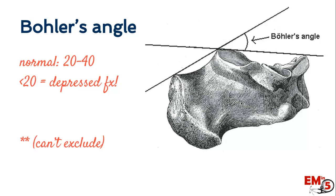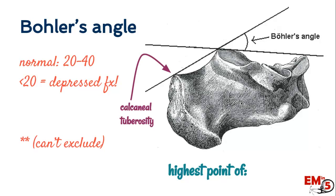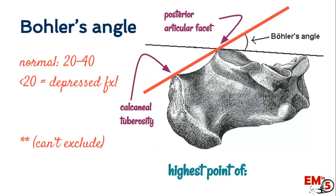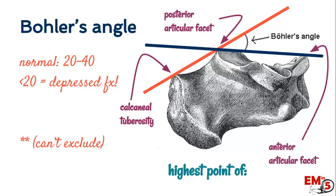To measure Böhler's angle, you're going to draw two lines. Draw a line from the highest point of the calcaneal tuberosity to the posterior articular facet — the highest point of the bone. The other line goes from that same posterior articular facet over to the anterior articular facet, also at the highest point. The smaller angle between those two lines is Böhler's angle. Normally it's about 20 to 40 degrees. If it's less than 20, that's concerning for a depressed fracture and you should pursue further imaging.